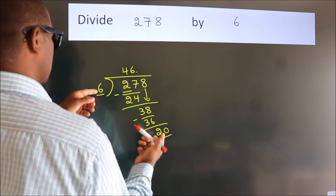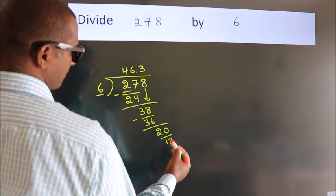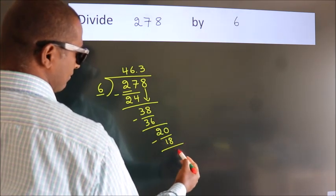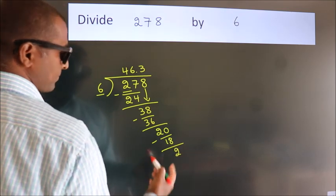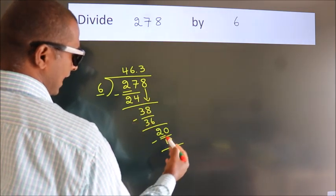in the 6 table is 6 times 3, which is 18. Now we subtract and get 2. Now you observe we had 2